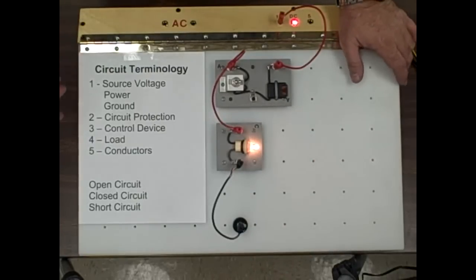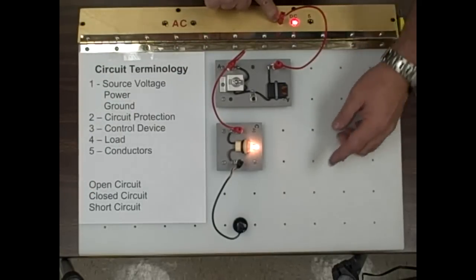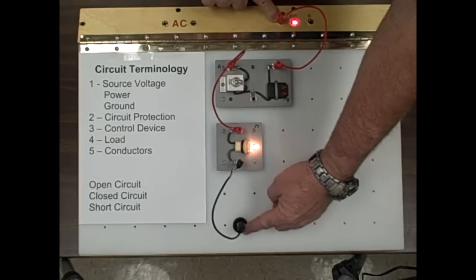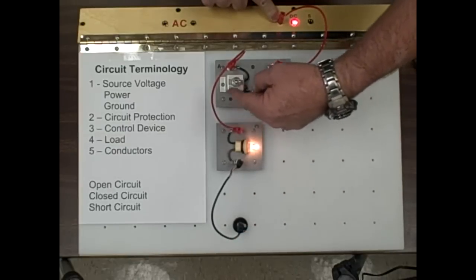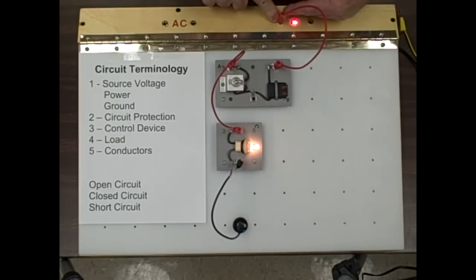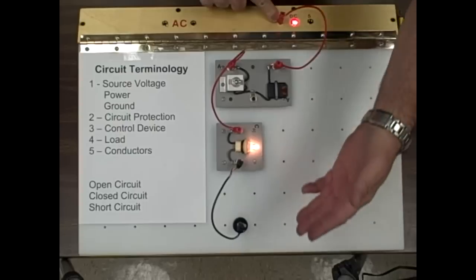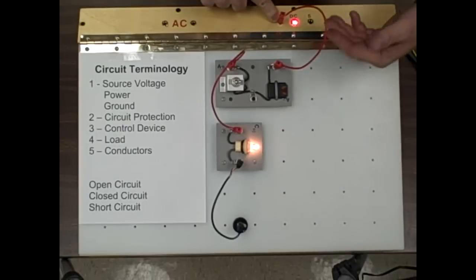Looking at some further terminology, what we have right here is a closed circuit because between the positive post and the negative post we have a circuit that is complete and closed and it has a path for current to flow, therefore it works. So it's called a closed circuit.